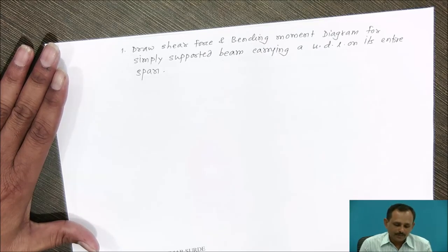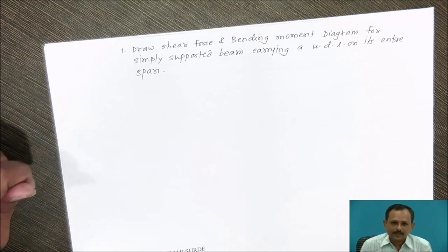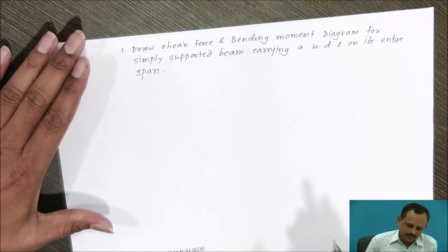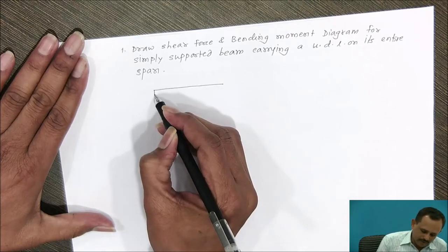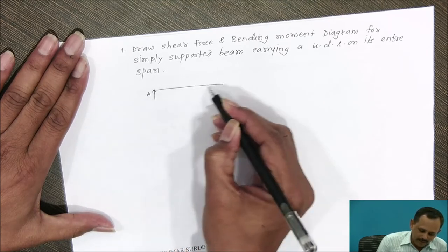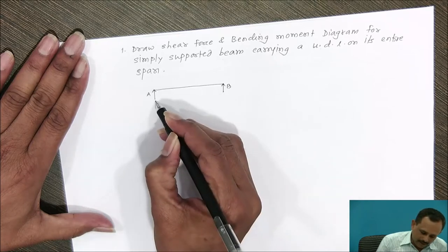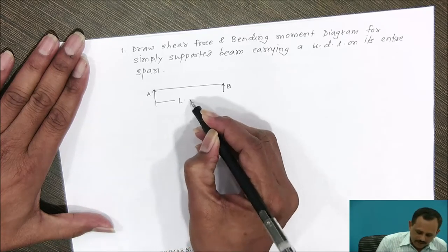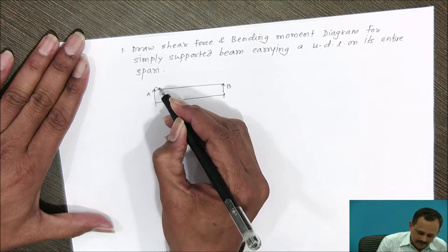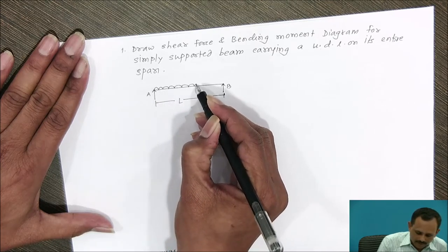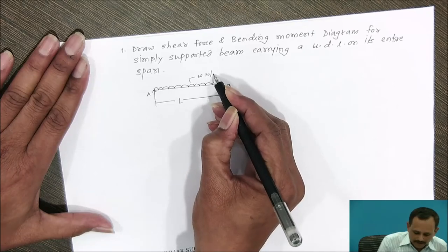For a simply supported beam that carries UDL over its entire span, consider a beam supported at A and B having length L, carrying uniform distributed load over its entire length at a rate of load W newton per meter.